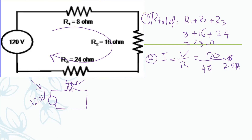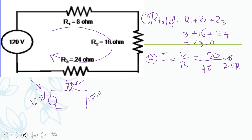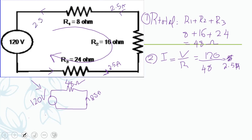This 2.5 ampere means the current at every point in the circuit is 2.5 ampere. Coming back to the original circuit before simplifying, the current at each resistor is also 2.5 ampere.